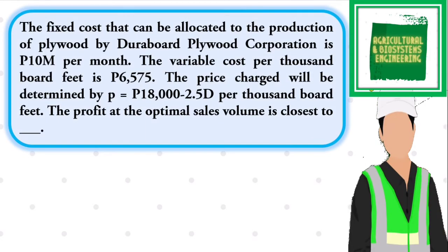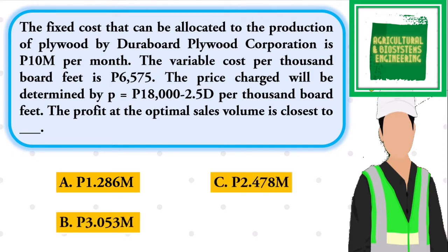We will solve this sample problem to show you how to solve for profit. The fixed cost allocated to the production of plywood by Duraboard Plywood Corporation is 10 million pesos per month. The variable cost per thousand board feet is 6,575 pesos. The price charged will be determined by: Price = 18,000 pesos − 2.5 × D per thousand board feet. The profit at the optimal sales volume is closest to: (A) 1.286M pesos, (B) 3.053M pesos, (C) 2.478M pesos, or (D) 3.670M pesos.